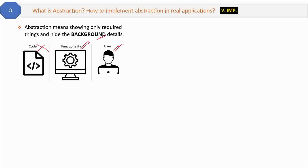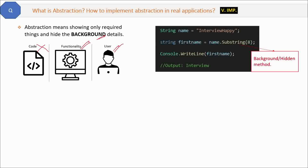A driver can drive a car without knowing the engine's internal working. Similarly in coding, one developer can use a function without knowing how it works internally. For example, we use the substring method of a string class — this method is somewhere inside the base class of the .NET framework, and without knowing the background details, you are using it. That is also a kind of abstraction.